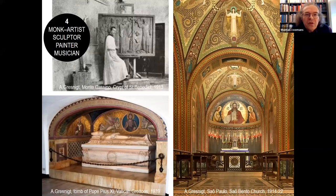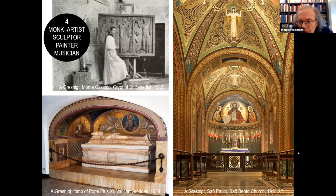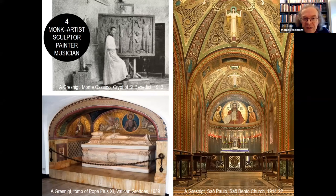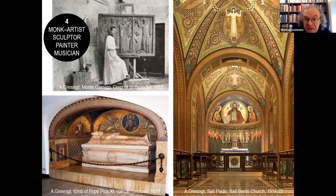Three of his major works: the crypt of St. Benedict in Monte Cassino in 1913 — he is sculpting there, as he is a sculptor, a painter, and also a mosaicist. The picture to the right is a view of one of the chapels of the church in São Paulo. And to the left is his most prestigious work, which is the tomb of Pope Pius XI in the grottoes of the Vatican. I insist on this because his entire artistic life was very coherent, completely devoted to painting and sculpture in the style of Beuron. There is only one exception: the four years he went to China, where he was asked to design architecture. That is really a small moment in his life, but it has to be contextualized.